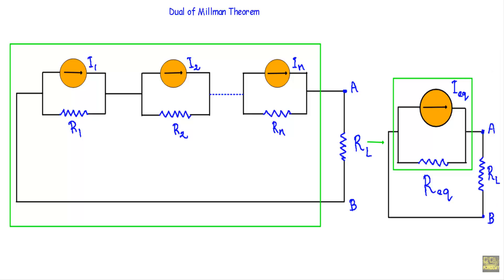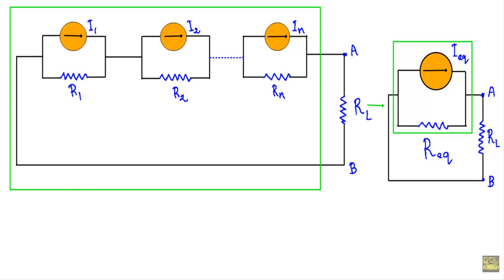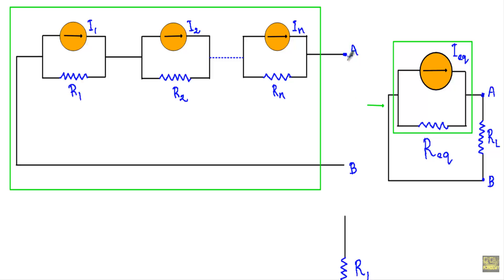How do we calculate the equivalent current I equivalent? To calculate I equivalent, first I have to remove the load resistor across terminals A and B. After removing the load resistor, we connect terminals A and B with a short circuit. The current flowing through this A, B short path will be our I equivalent.